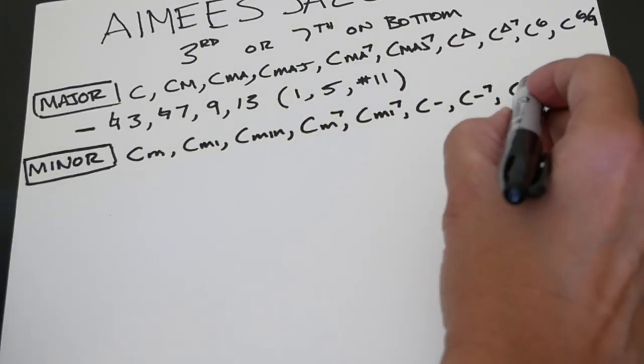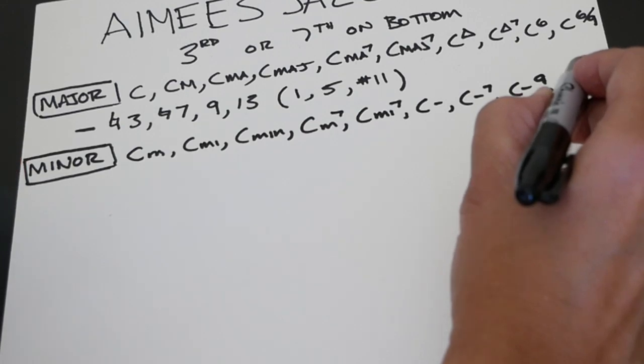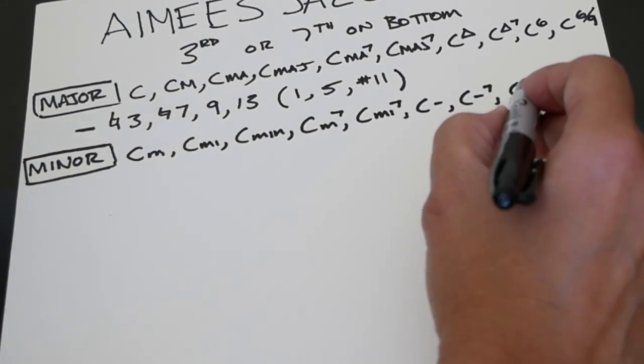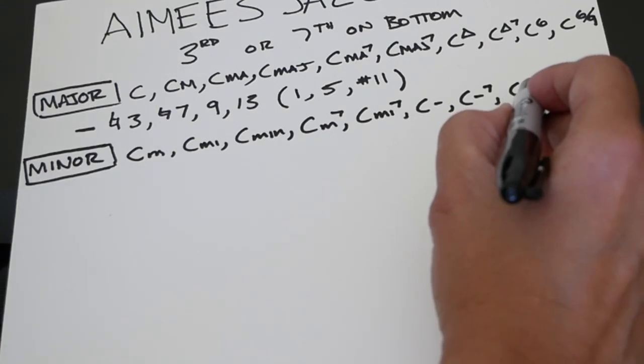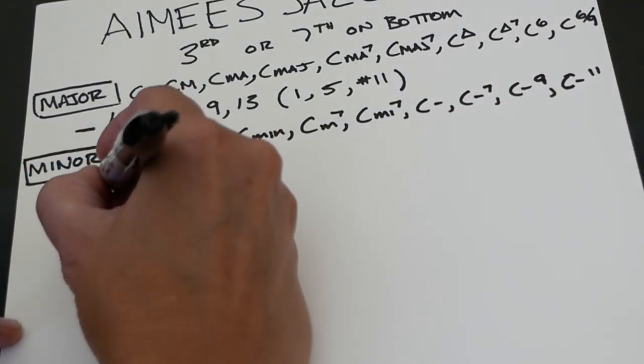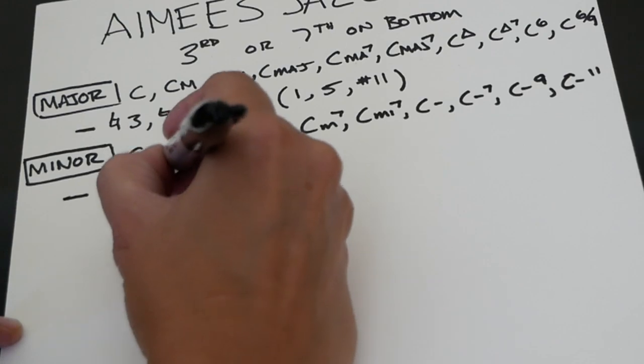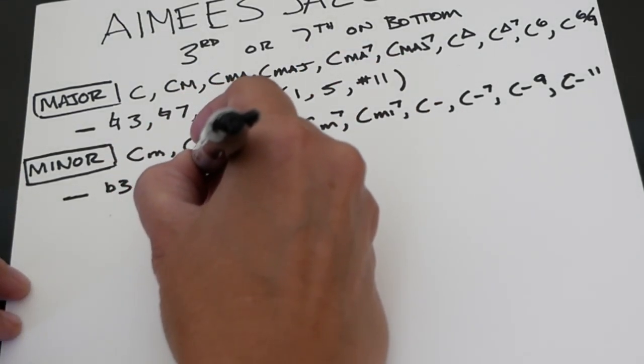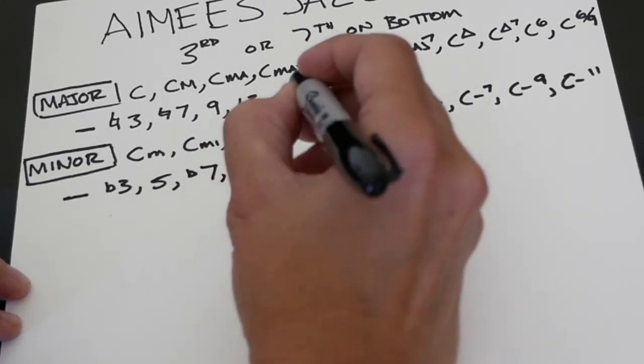Usually if you see a nine or eleven written as one of the chord types of a minor chord, it's because that note figures prominently in the melody. You'll hear a nine really strongly in the melody over that C minor chord. The important notes to play over a minor chord are the flat three, the five - the five isn't as boring on a minor chord, it's more important - the flat seven, and the nine.